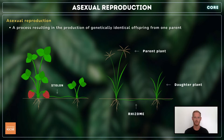In plants like grasses and ferns, horizontal stems called rhizomes grow under the ground. New shoots develop from buds on the rhizomes and become independent plants when the connecting rhizome dies.